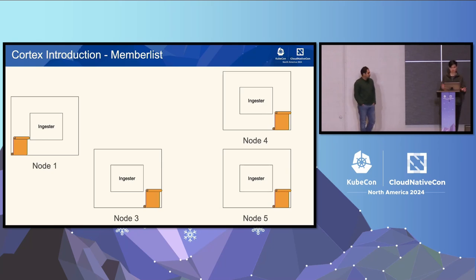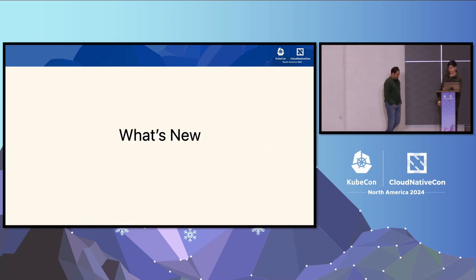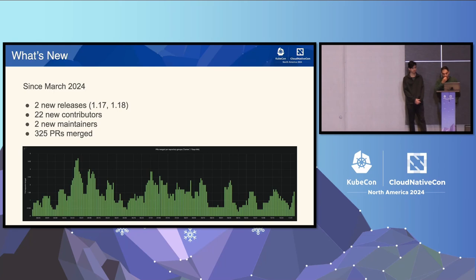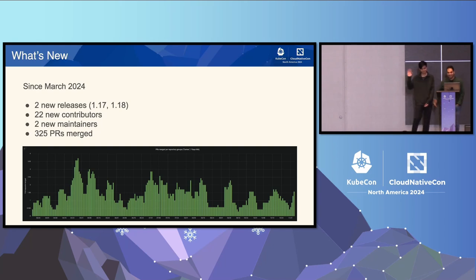That's the introduction to Cortex. I'll hand it off to Daniel to talk about what's new. Since our last talk around March 2024, we've had two new releases — .17 and .18 — 22 new contributors, two new maintainers (which are actually us), and 3,325 PR merges. This shows the project is growing, it's healthy, and the community is helping a lot.